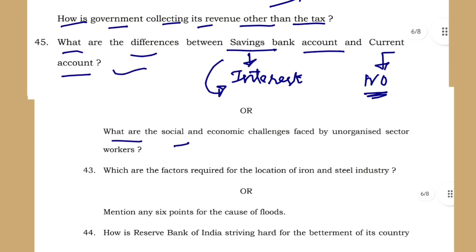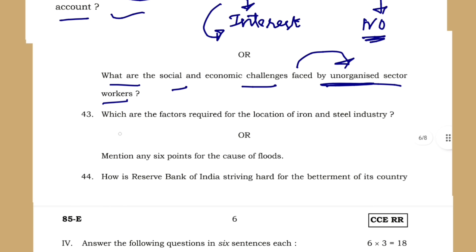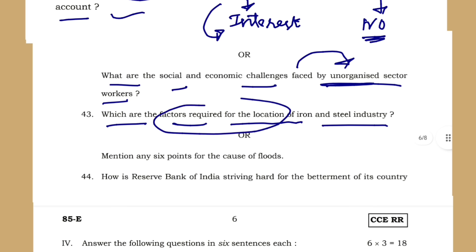What are the social and economic challenges faced by the unorganized sector? How do the unorganized and organized sectors differ? Which are the factors required for the location of the iron and steel industry? This question about factors required for location of industries — including paper industry and iron and steel — has been asked every year.